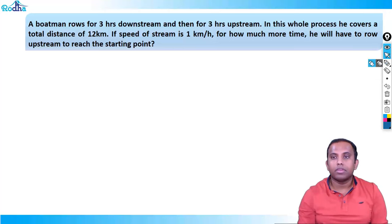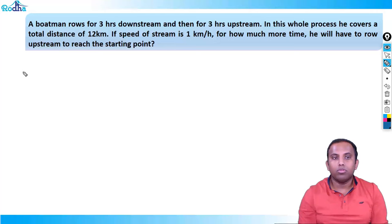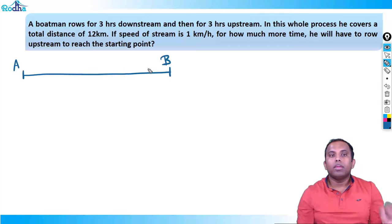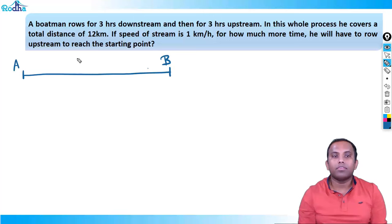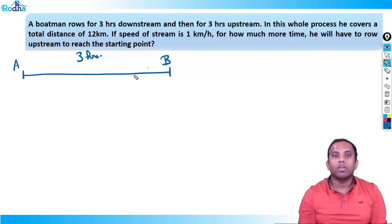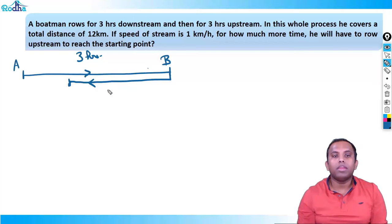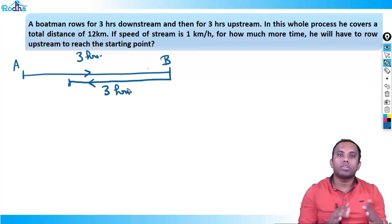We start with C. Get the concept here. A boatman rows for 3 hours downstream and then 3 hours upstream. Suppose he is going from point A to B. If he drives for the same time — 3 hours downstream and 3 hours upstream — while going downstream this direction is downstream, and this is upstream.